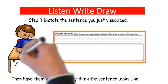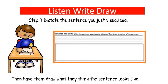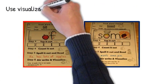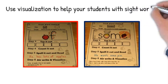Step seven is Listen, Write, and Draw. In this step, you'll have the student write the sentence that they just visualized. You will read it to them and then they will write it down. After they write it, you can check it with them, see if there are any mistakes, and go over those with them. After that, they can draw a picture of what they think the sentence looks like.